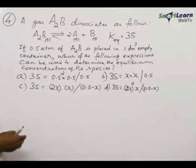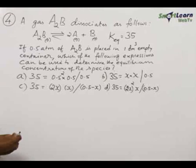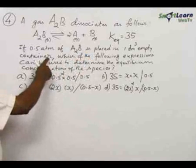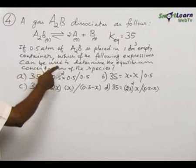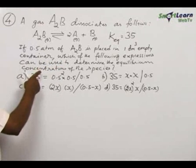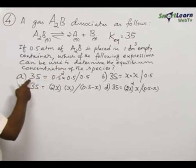If 0.5 atmosphere of A₂B is placed in 1 dm³ empty container, which of the following expressions can be used to determine the equilibrium concentration of the species?